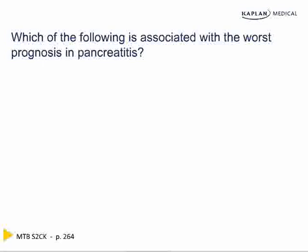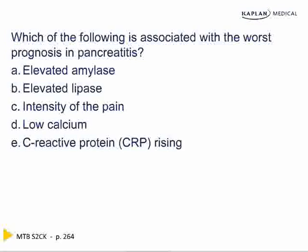Which of the following is associated with the worst prognosis in pancreatitis? Is it an elevated amylase, an elevated lipase, the intensity of the pain, low calcium, or a rising C-reactive protein? If you chose D, low calcium, you are correct.